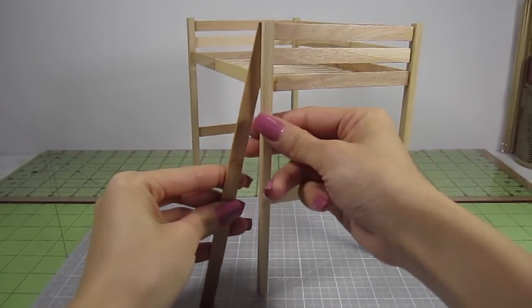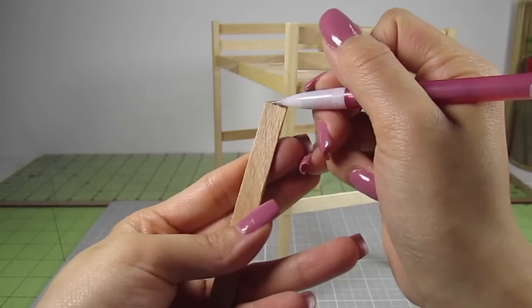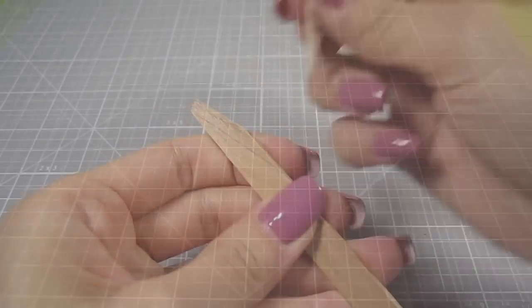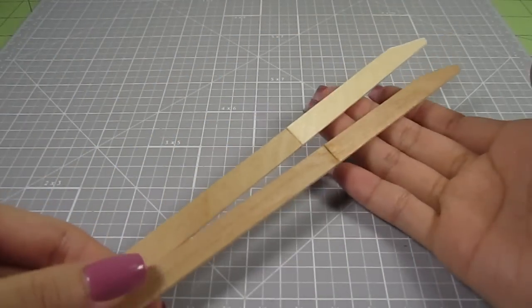Line it up against the bed and draw a line where the dowel meets the ladder. Draw a parallel line about 1 eighth of an inch away from there. Cut that out. Make 2 of these. These will be the sides of your ladder.